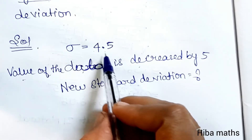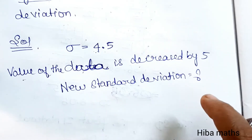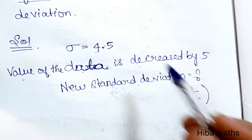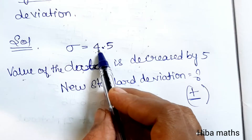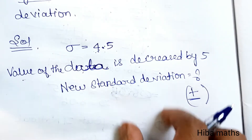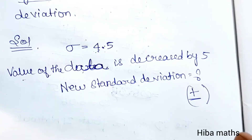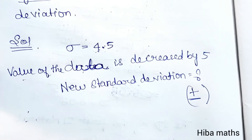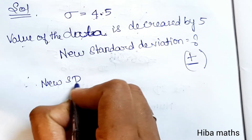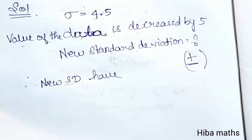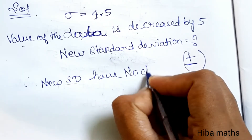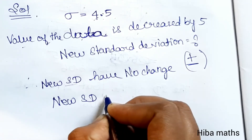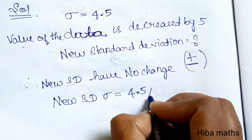We already know that the standard deviation value does not change when all values are decreased by 5 or increased by any constant. Therefore, the new standard deviation has no change. New standard deviation is equal to 4.5.